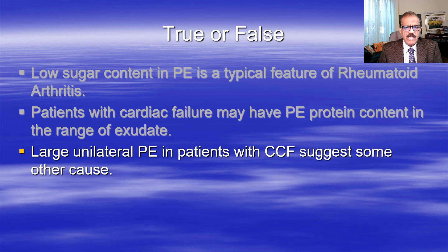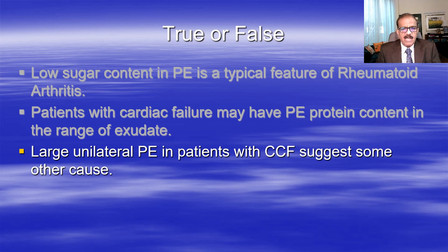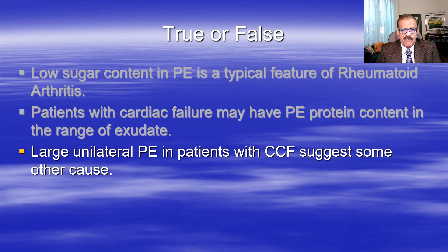Large unilateral pleural effusion in a patient with CCF (congestive cardiac failure) suggests some other cause. In heart failure, pleural effusion is usually bilateral and mild to moderate - not massive. So if you have a known case of heart failure with one-sided fairly large pleural effusion, that suggests the cause is actually different from heart failure. This statement is true - unilateral large effusion, whether or not there is heart failure, should suggest a local cause.